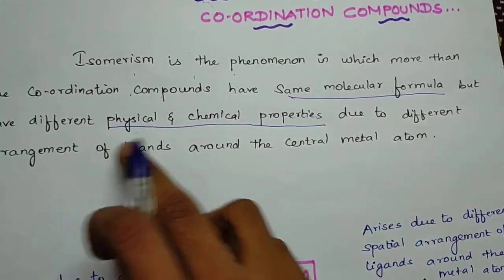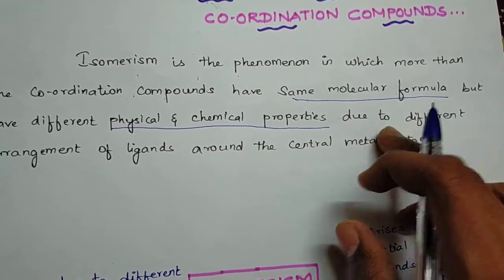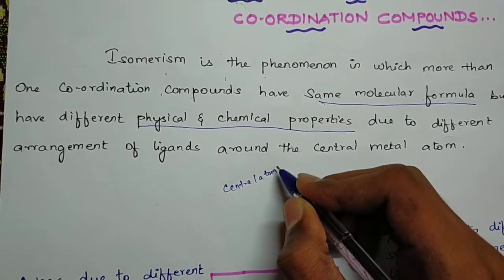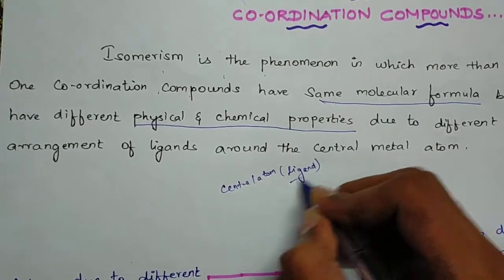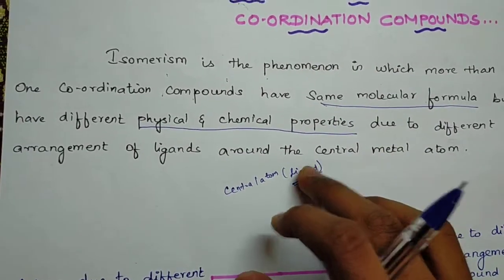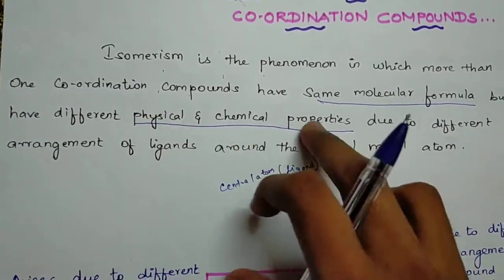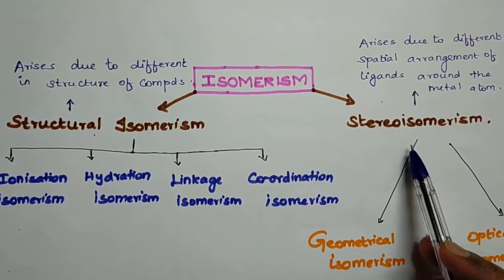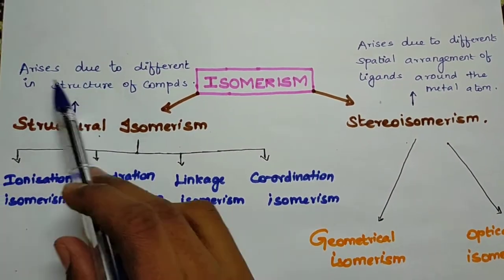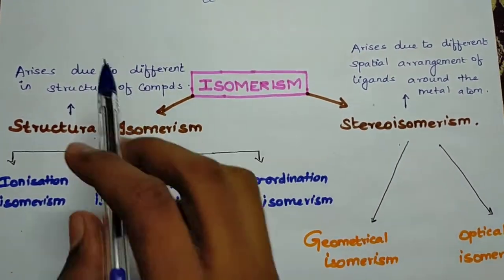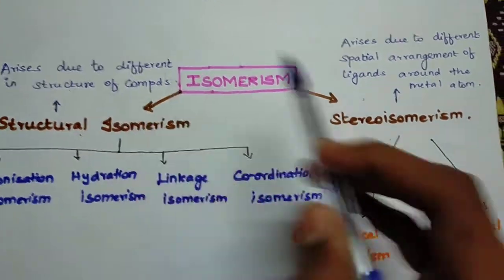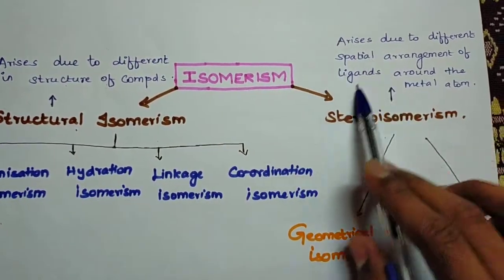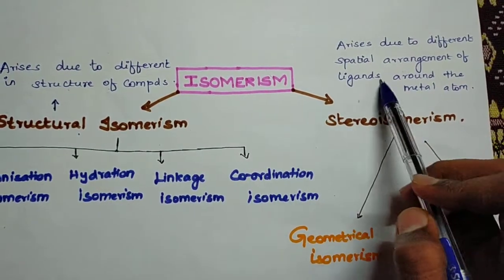The different physical and chemical properties arise due to the different arrangement of ligands around the central metal atom. The ligand arrangement differs while the molecular formula remains the same, leading to different physical and chemical properties.